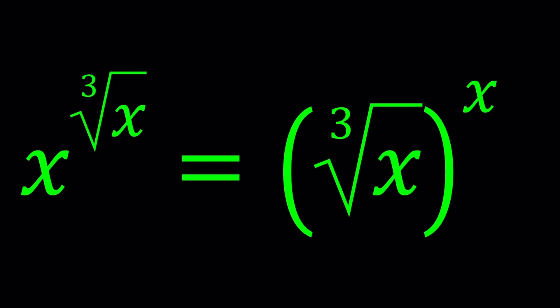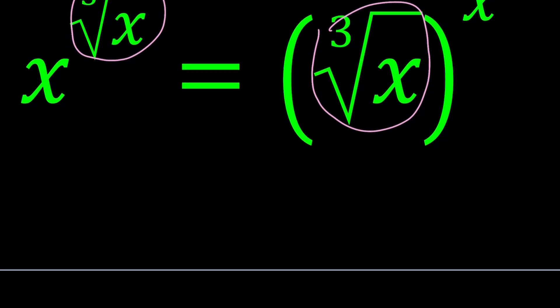First, I want to notice that this expression right here is the same as this one. So this equation is in the form x to the power y equals y to the power x. Make sense?